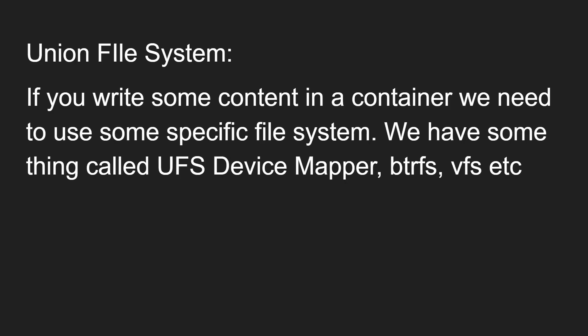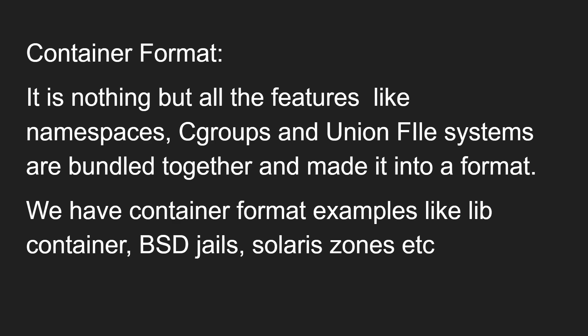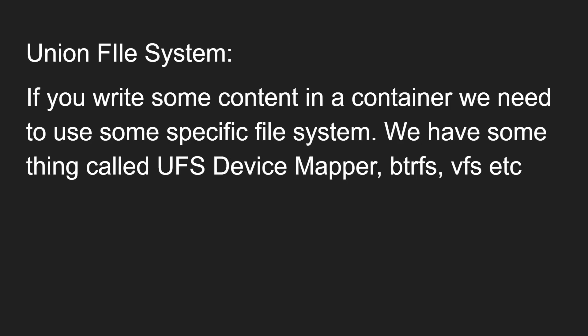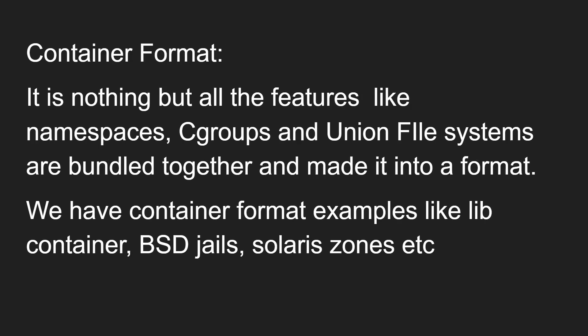The next underlying technology is the union file system. If you write some content in a container, you need a specific file system. We have something called UFS, device mapper, BTRFS, VFS, etc. — these are types of file systems used in Docker. And another one is container format. All the features we have learned — namespaces, cgroups, and file system — are bundled together and made into a particular format, and this format is used by Docker.